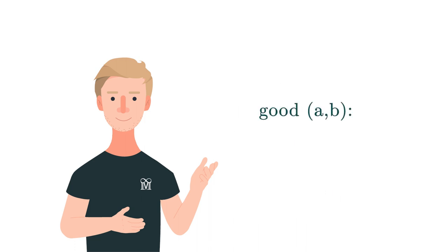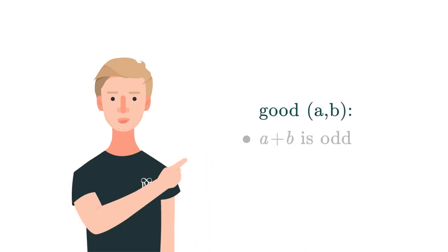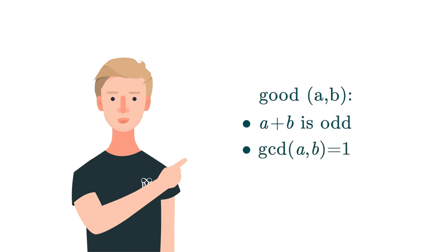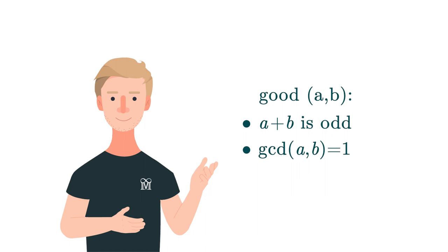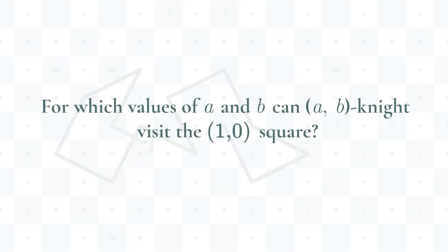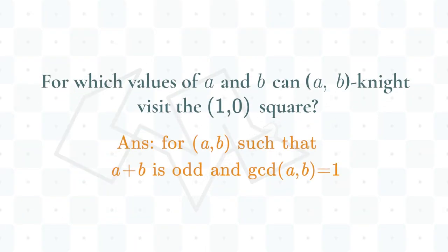We now have two conditions for a and b. A plus b must be odd, and greatest common divisor of a and b must be equal to 1. And as it turns out, these are the necessary and sufficient conditions for a,b Knight to be able to reach every square on the infinite board. Finally. But before I'll say goodbye to you, we need to prove it.